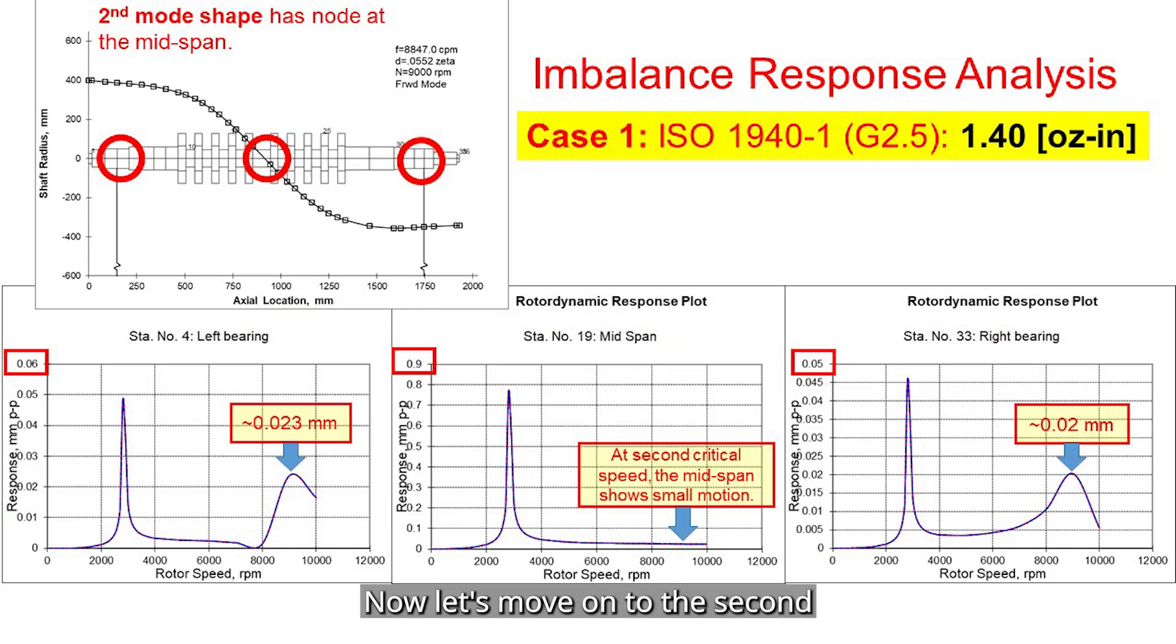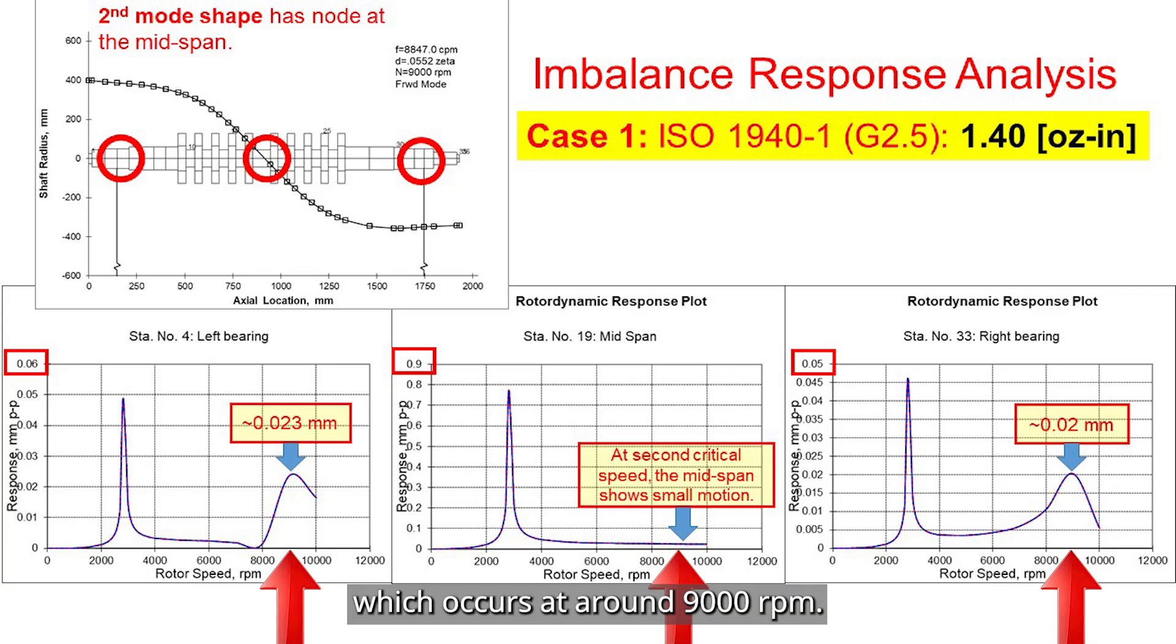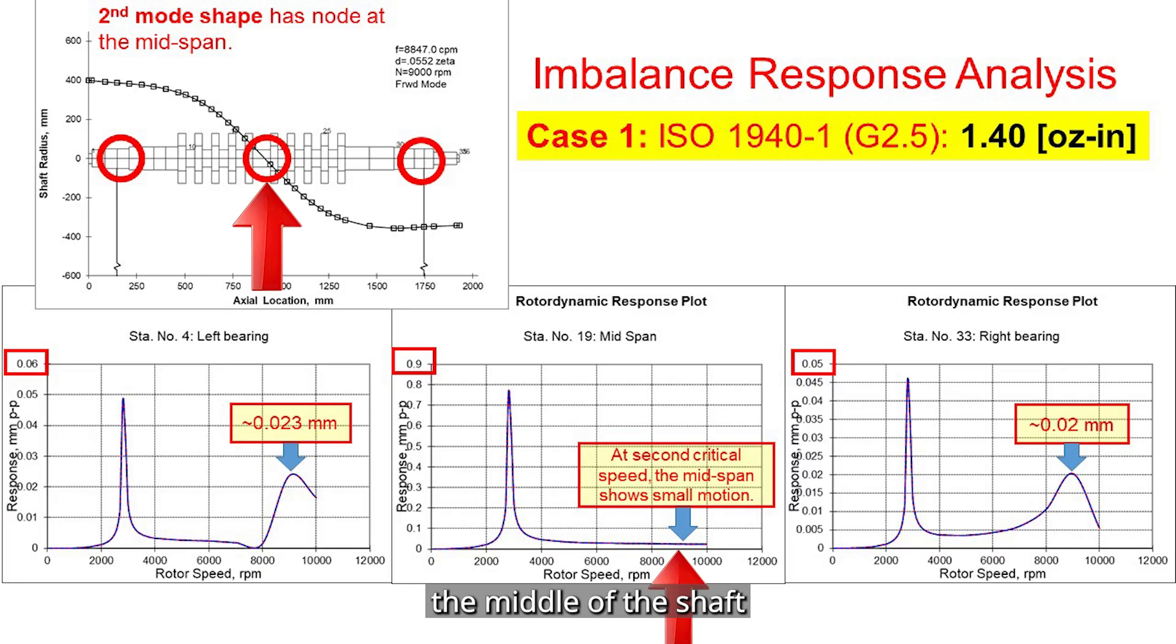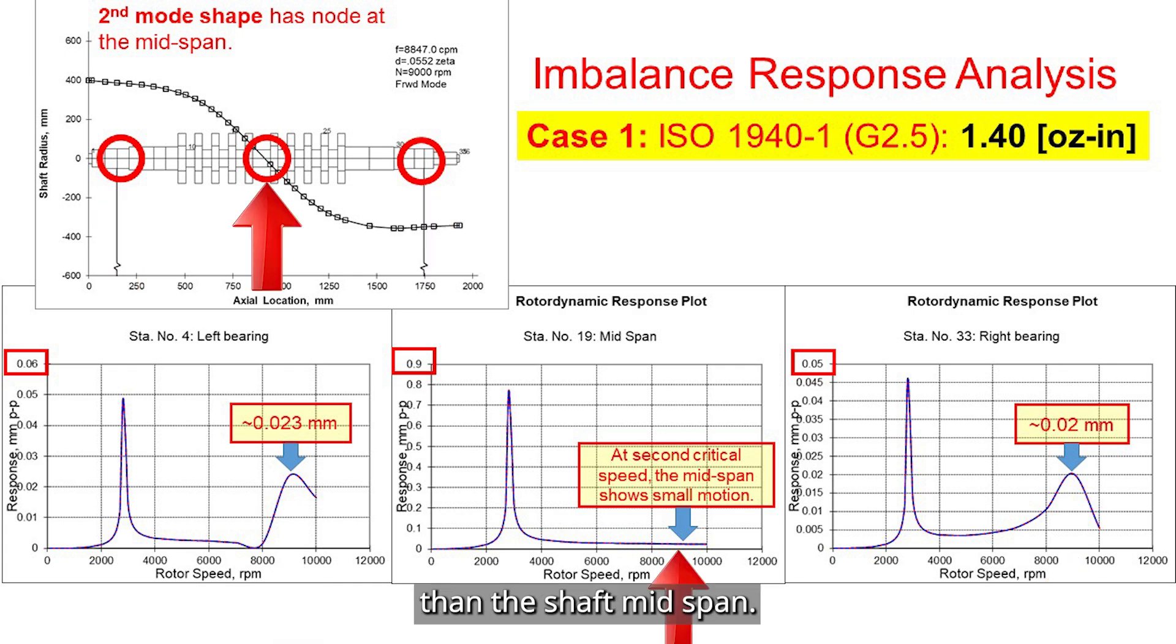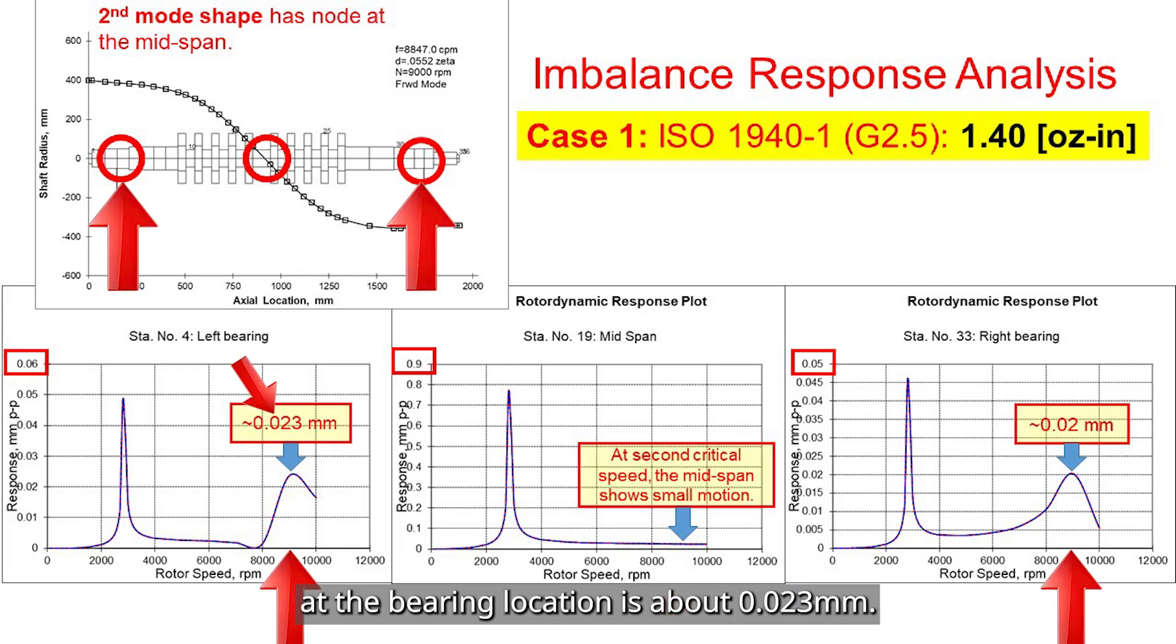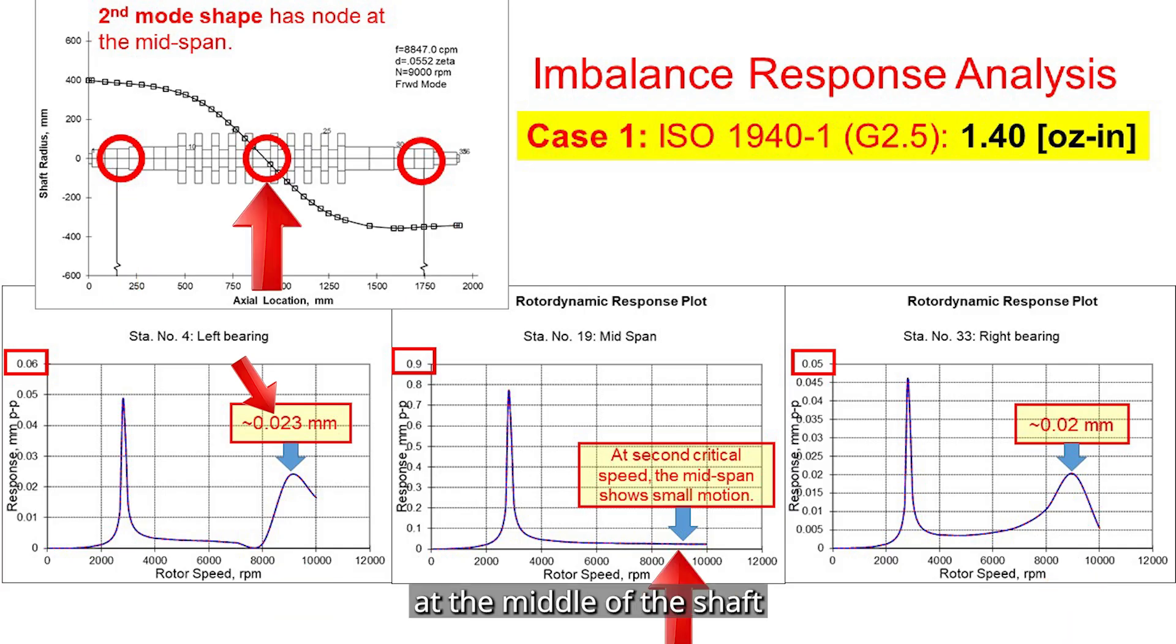Now let's move on to the second critical speed, which occurs at around 9000 rpm. If you look at the mode shape, you will notice that the middle of the shaft has very little motion in this mode. That's why in the rotor response amplitude plot, the bearing locations actually show more vibration than the shaft mid-span at this speed. The peak amplitude at the bearing location is about 0.023 mm, while the vibration at the middle of the shaft remains quite small.